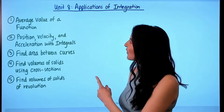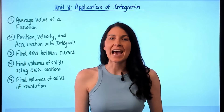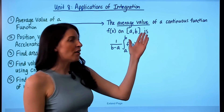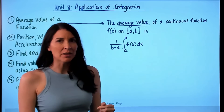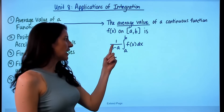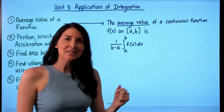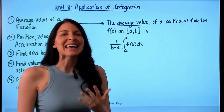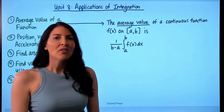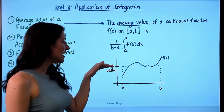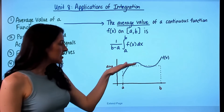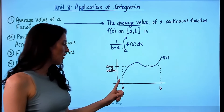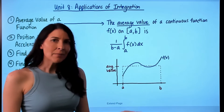The first thing I want to go over from Unit 8 is the average value of a function. The average value of a continuous function on the interval a to b is 1 divided by (b minus a) times the integral from a to b of f(x) dx. The average value is the height of a rectangle that would give you the same area as the area under the f(x) curve from a to b.